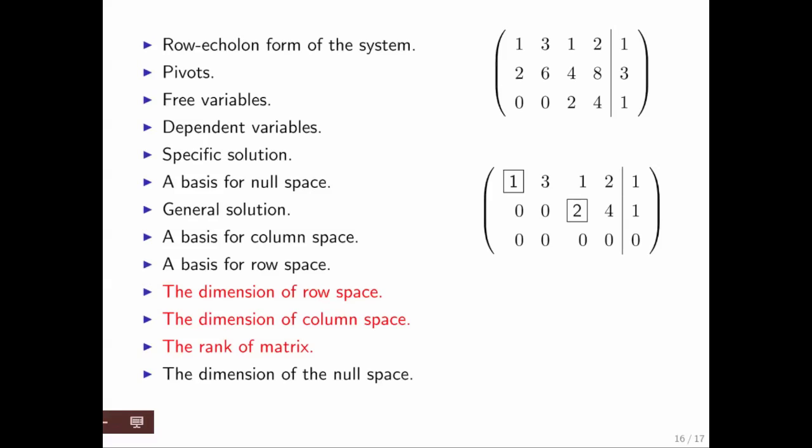Next, the dimension of the row space, the dimension of the column space, and the rank of the matrix all equal the number of pivots that you have. If there are k pivots, then all of these equal k. In this particular case, k equals 2.